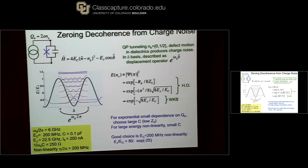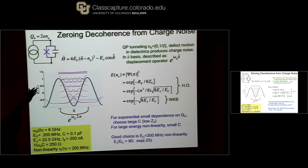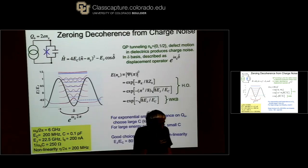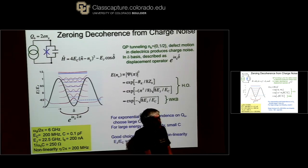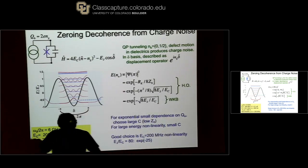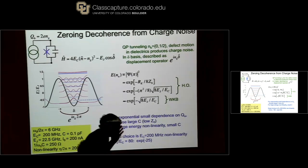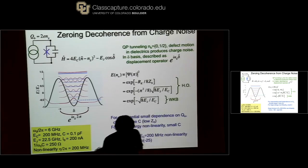The basic problem is: you hook up your device and measure the charge, and the charge on your device is fluctuating by about 10⁻³ of an electron. Sometimes a little bit more, sometimes less. If you're sensitive to charge, then your frequency is fluctuating by maybe 10⁻³ or so, and you're going to dephase and lose your coherence pretty fast — say 10 to 100 nanoseconds. That's not good.